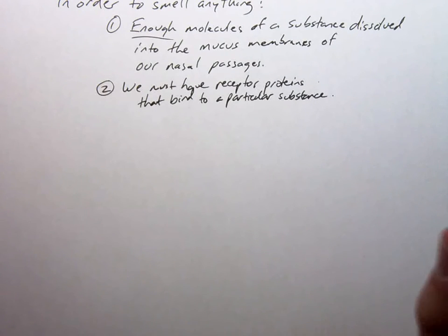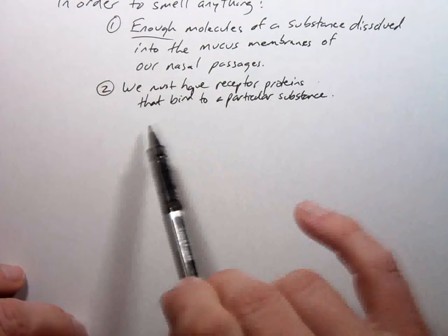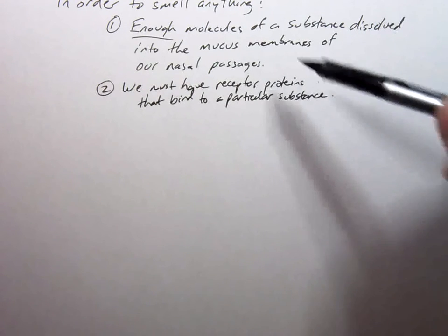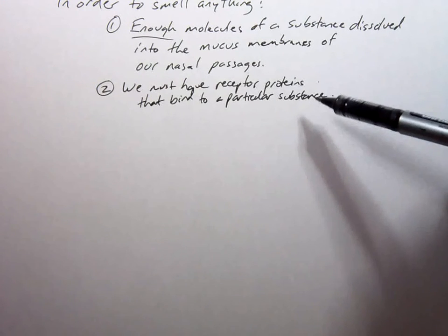Or natural gas. You're like, well wait a minute, I can smell natural gas if it's leaking. You can smell it because they add fragrance to it. They add a fragrance to it that we can detect so we don't blow up and stuff. We have to have receptor proteins that bind to a particular substance. There are thousands of things that are in the air right now that you can't detect for one of these two reasons: there's either not enough of those molecules or we don't have proteins that bind to it specifically.